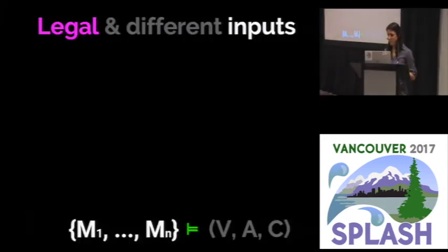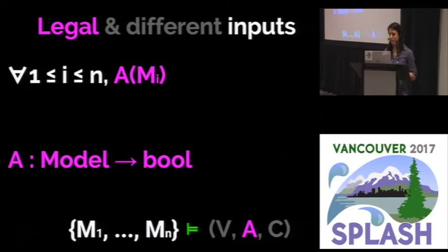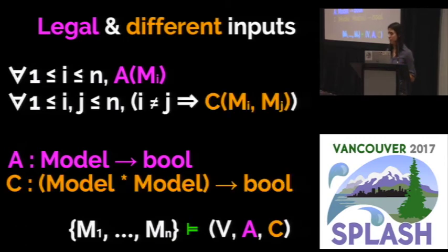So to find legal inputs, Yorick makes sure that the assertion A in your environment holds for each individual model. So A takes a model and it returns a boolean that's true when that model is legal. To make sure these inputs are different, Yorick makes sure the constraint C in your environment holds for every pair of models. So C takes a pair of models and returns a boolean that's true if those models are different.